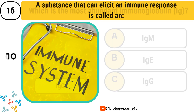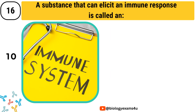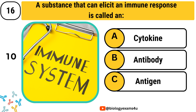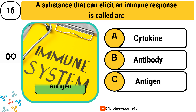Question number 16. A substance that can elicit an immune response is called an: Option A, cytokine. Option B, antibody. Option C, antigen. The correct answer is antigen.